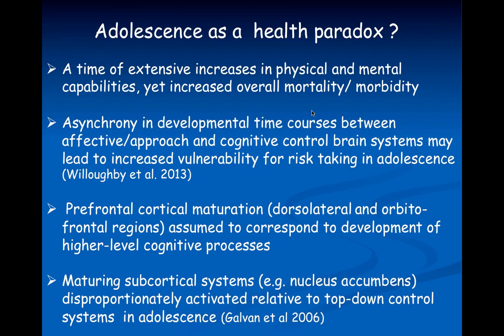Adolescence is a health paradox: it's a time of extensive increases in physical and mental capabilities, yet mortality and morbidity rates increase significantly from childhood. This is often due to preventable causes such as risk-taking behavior, car accidents, and drug abuse. We think there's an asynchrony in developmental timecourses between our affective approach systems and cognitive control brain systems, and this asynchrony may lead to increased vulnerability for risk-taking during adolescence.